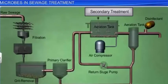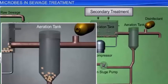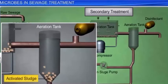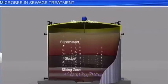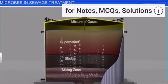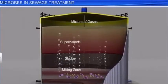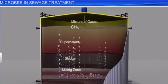Secondary treatment is continued till BOD decreases considerably. Once this is accomplished, the effluents are transferred to another aeration tank, where the flocs of bacteria are gradually allowed to sediment. This sedimented part of sewage is known as activated sludge, which is pumped into large tanks called anaerobic sludge digesters. Here, anaerobic bacteria digest the bacteria and fungi present in the activated sludge, and produce a mixture of gases such as methane, hydrogen sulfide, and carbon dioxide.